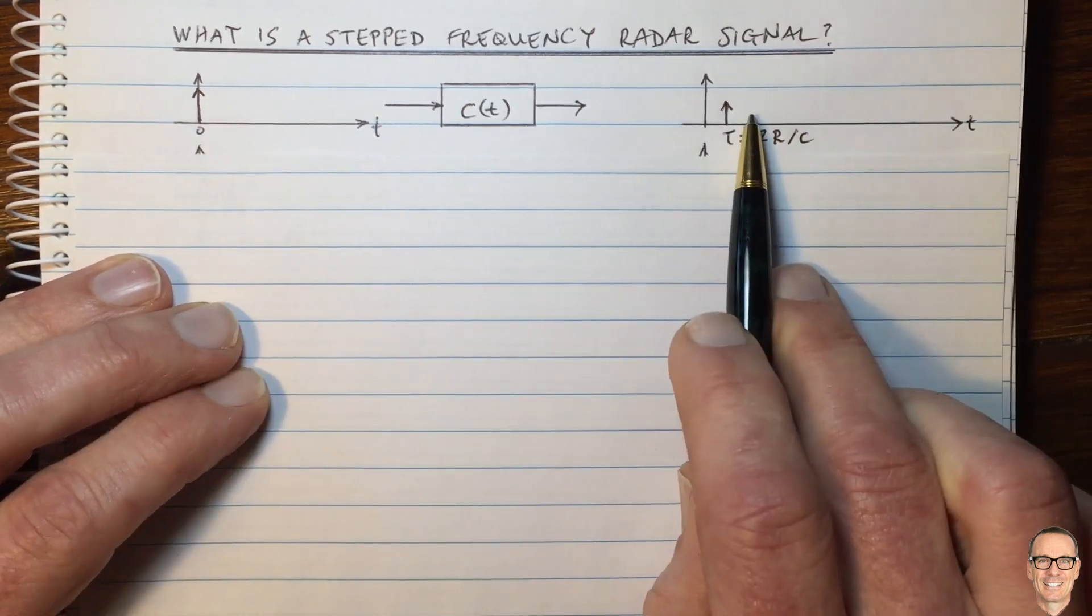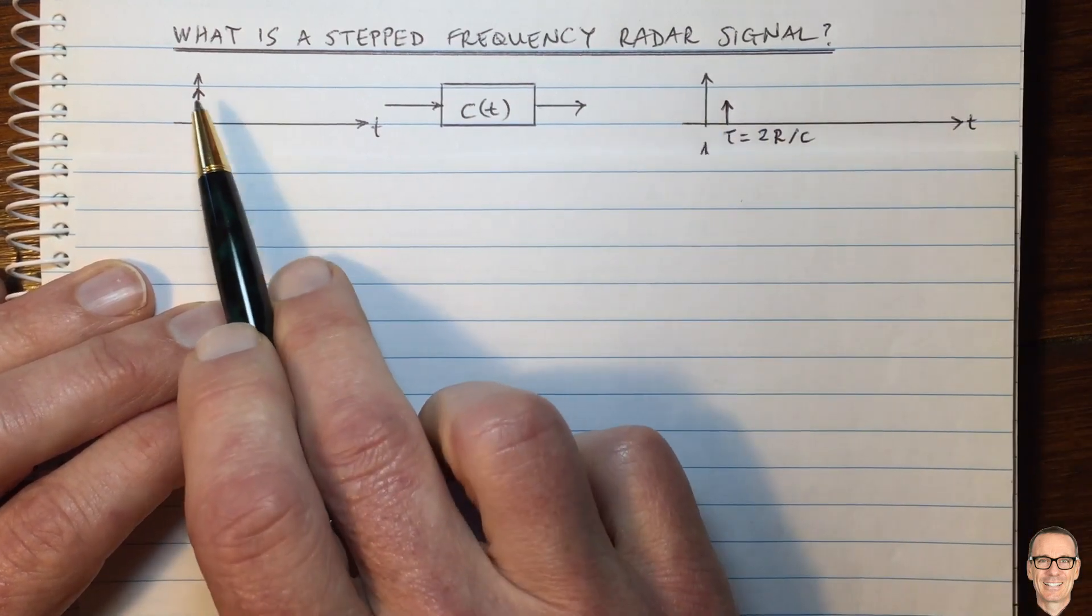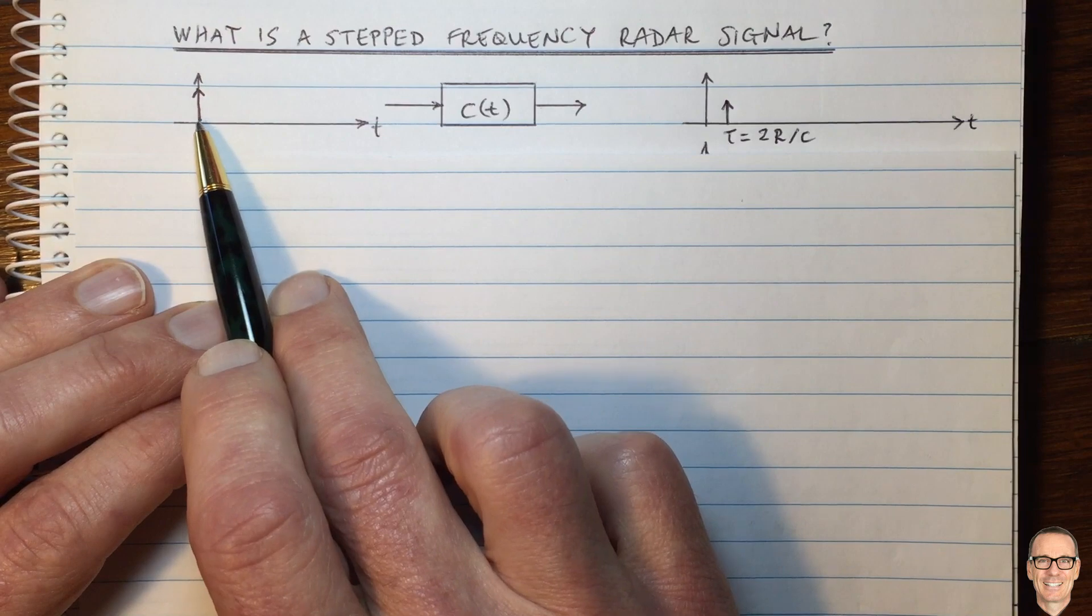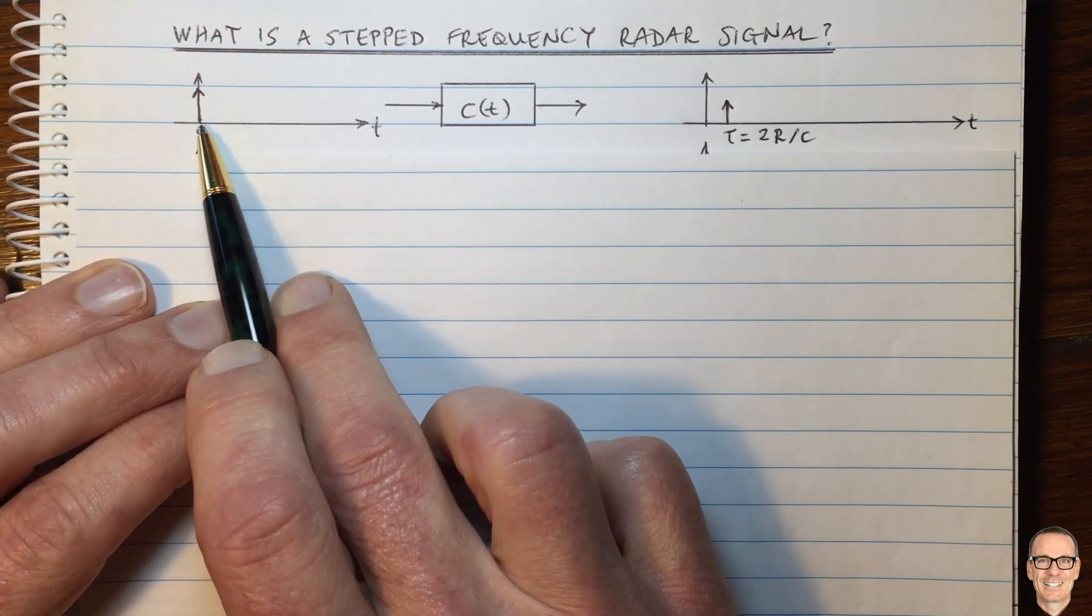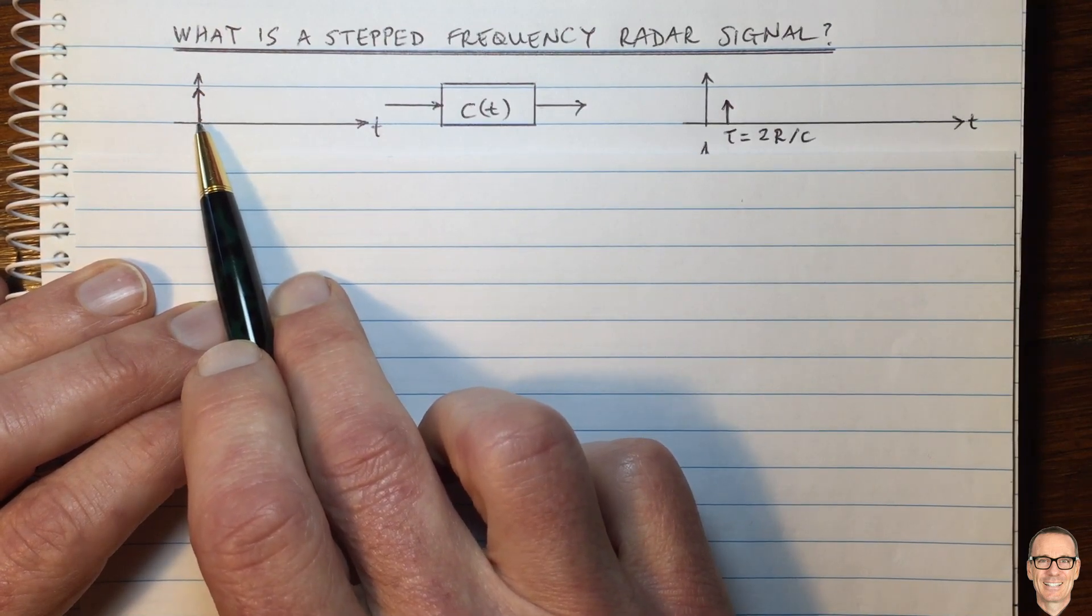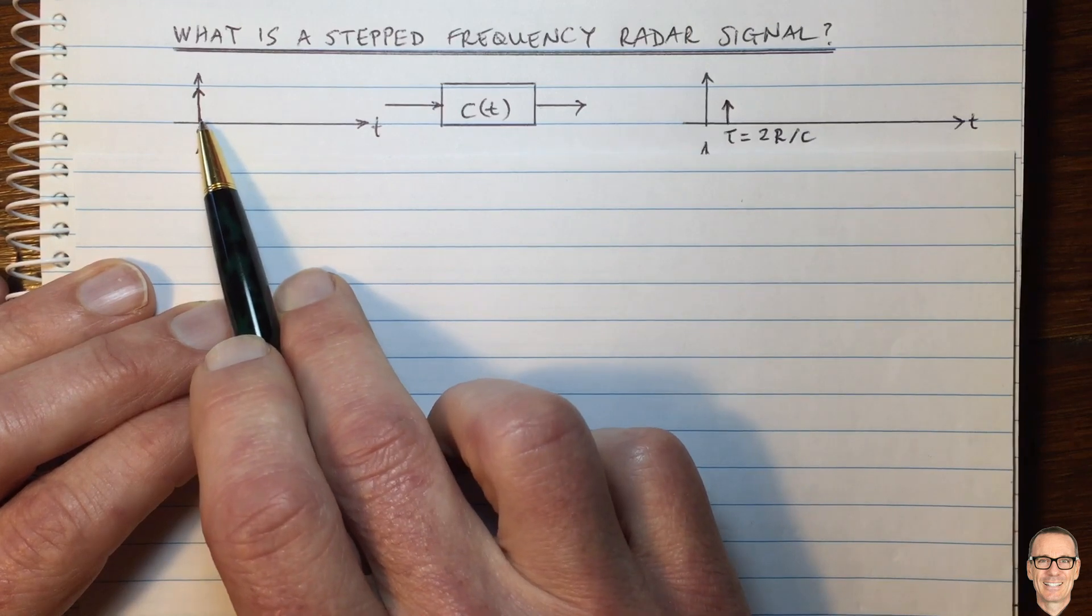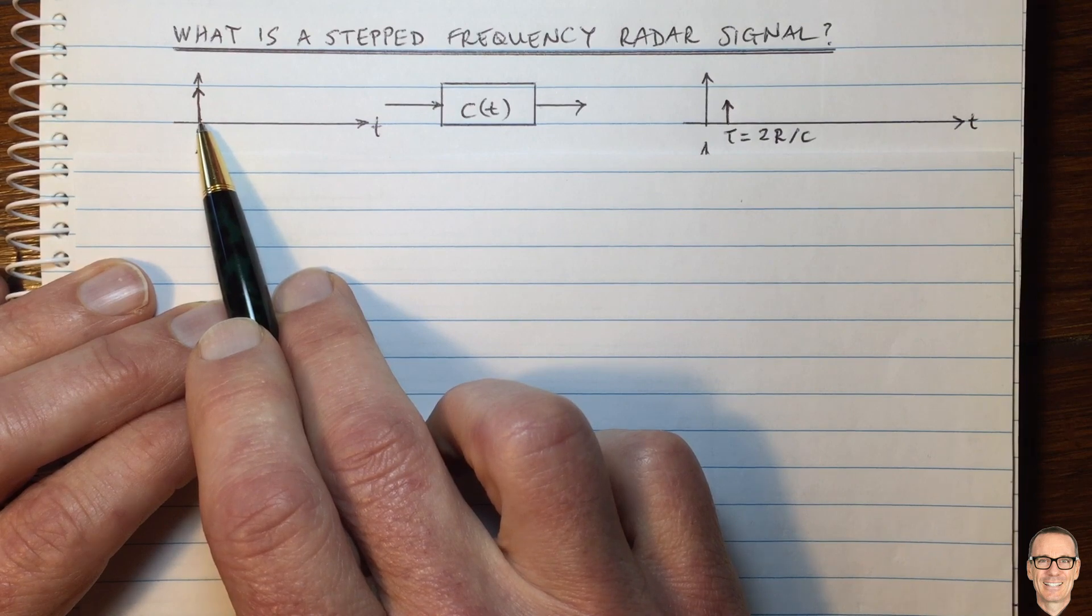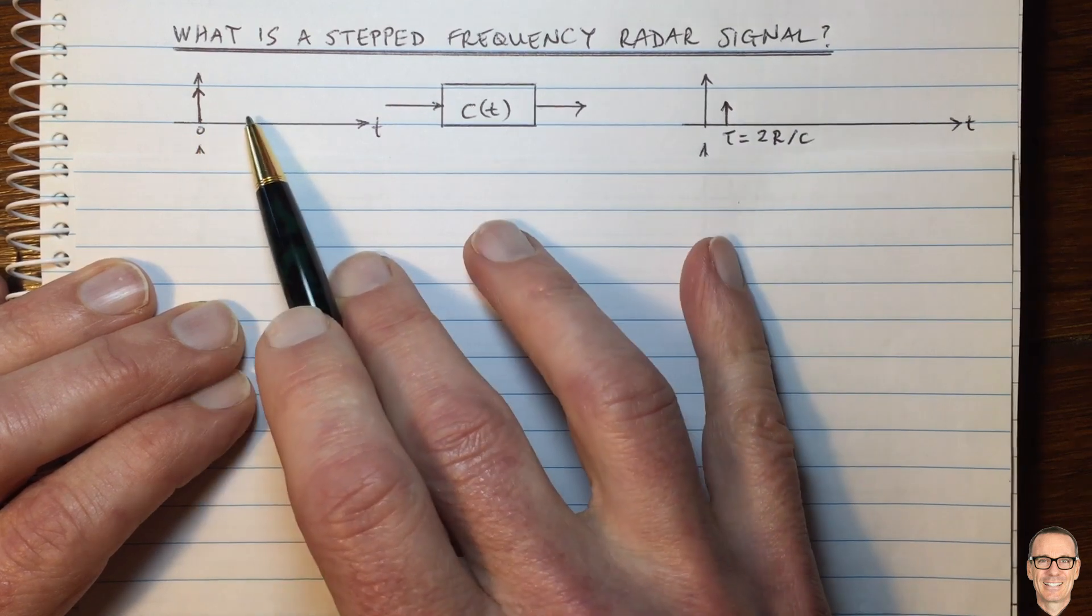This would be an ideal situation, but it's really not practical to send an impulse. The instantaneous power needs to be incredibly high and the bandwidth is infinite if it's an exact impulse. The dynamic range of an amplifier and the frequency response is just not feasible to have this in practice.